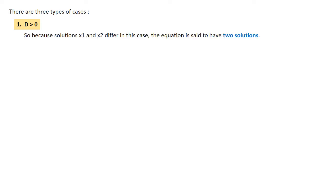Case 1: D > 0. Because solutions x1 and x2 differ in this case, the equation is said to have two solutions.